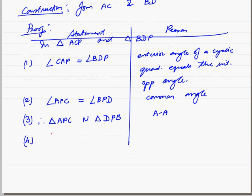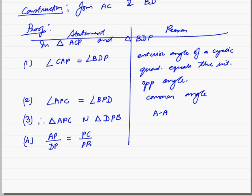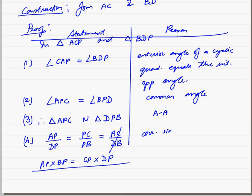As the two triangles are similar, we can take the ratio of their sides. Therefore, AP upon DP is equal to PC upon PB is equal to AC upon DB. You can cross multiply this. So AP into BP is equal to CP into DP. This is corresponding sides of similar triangles are proportional. Hence proved.